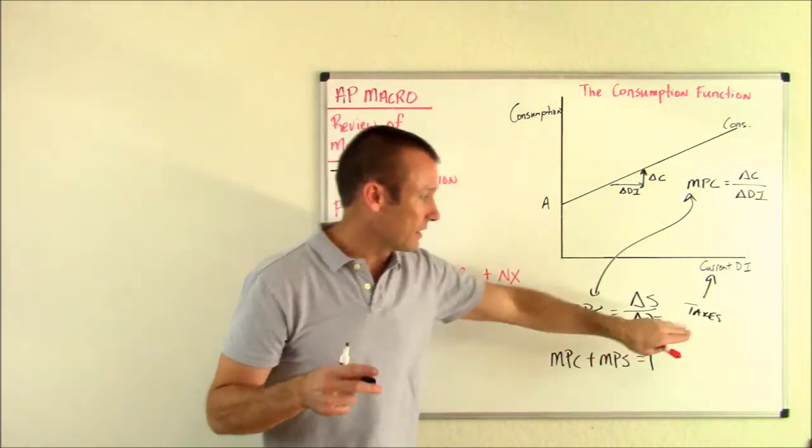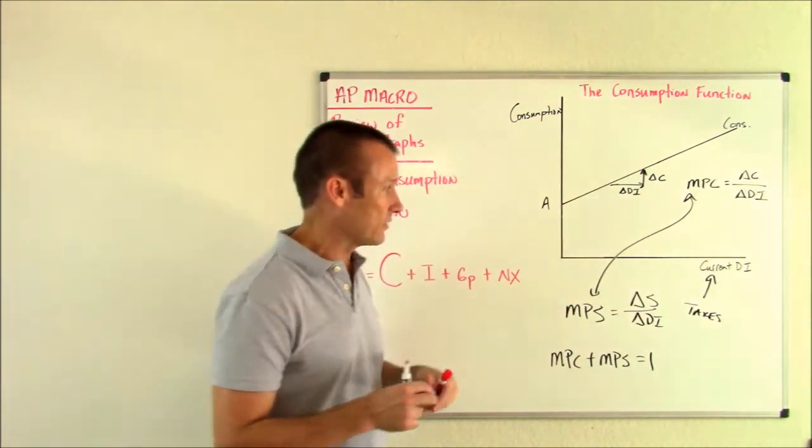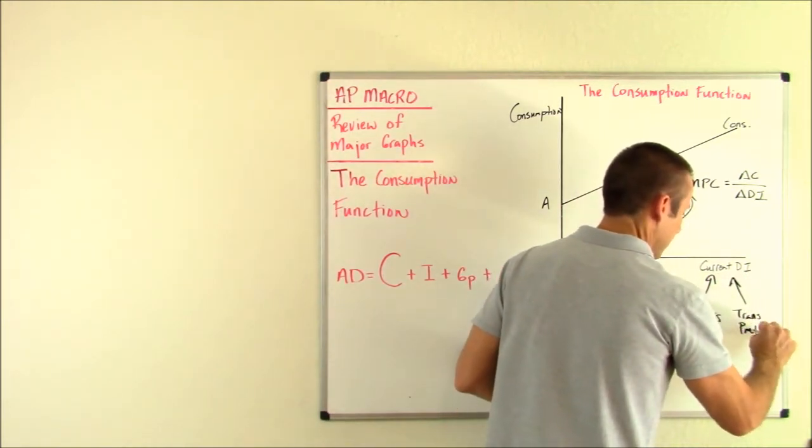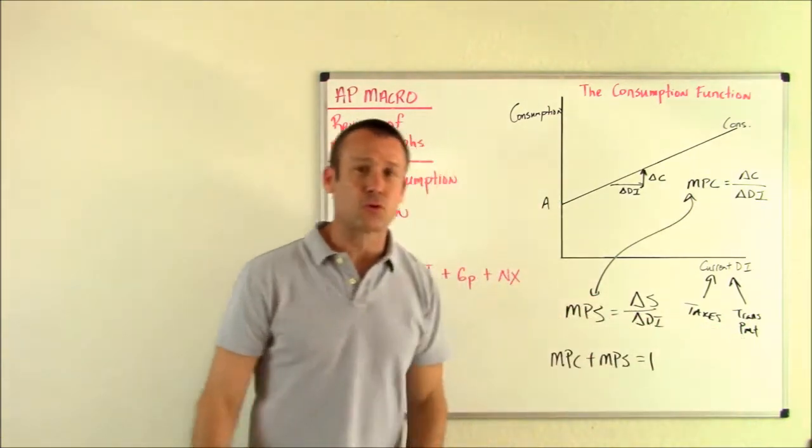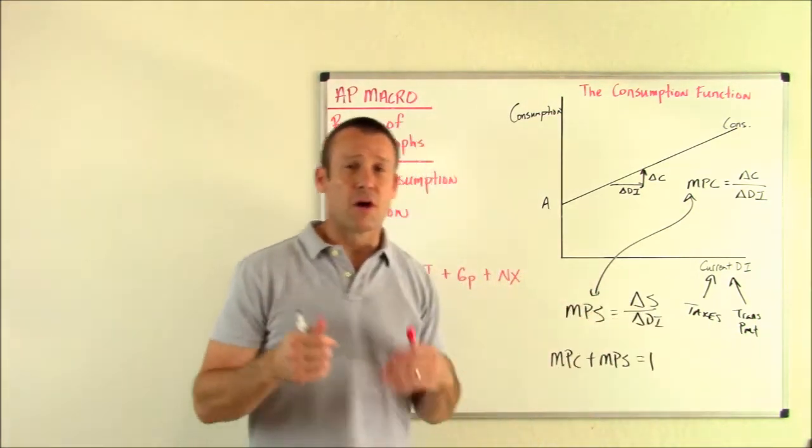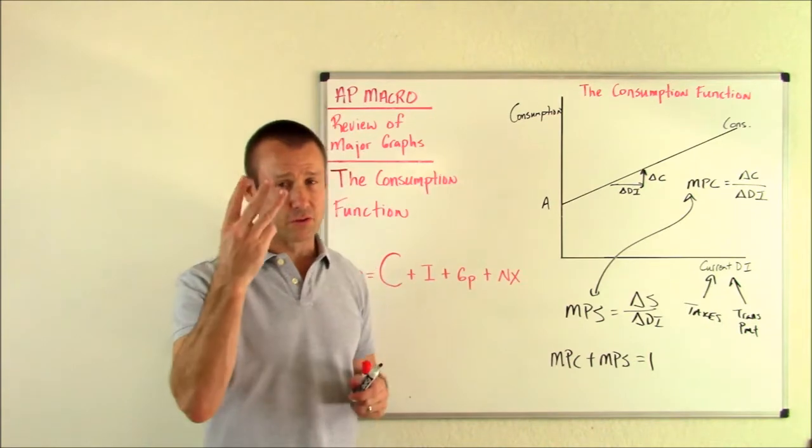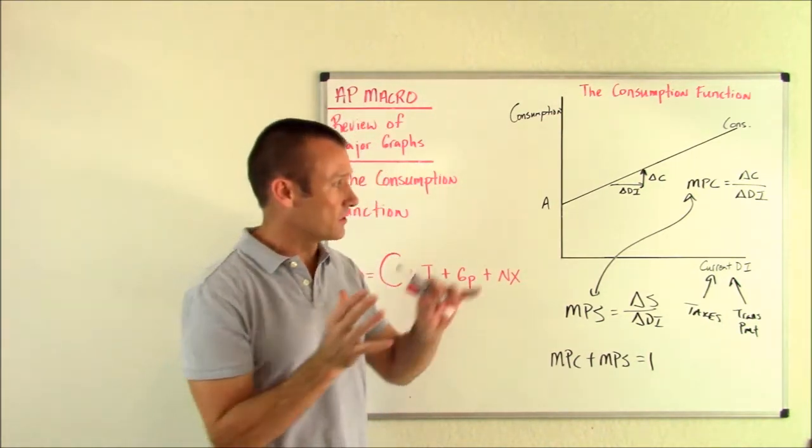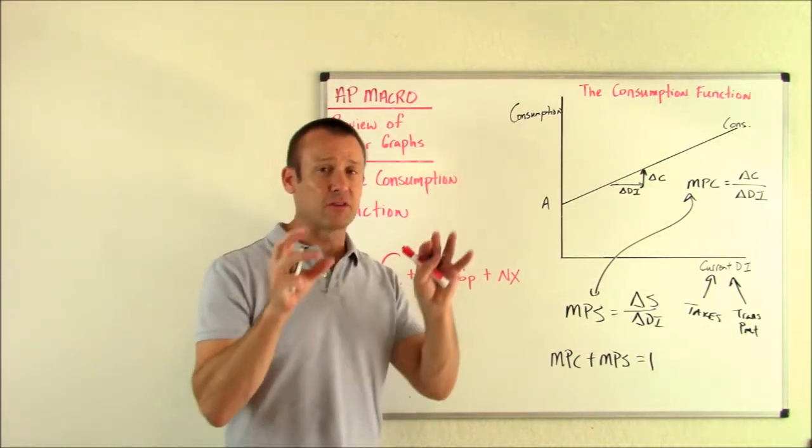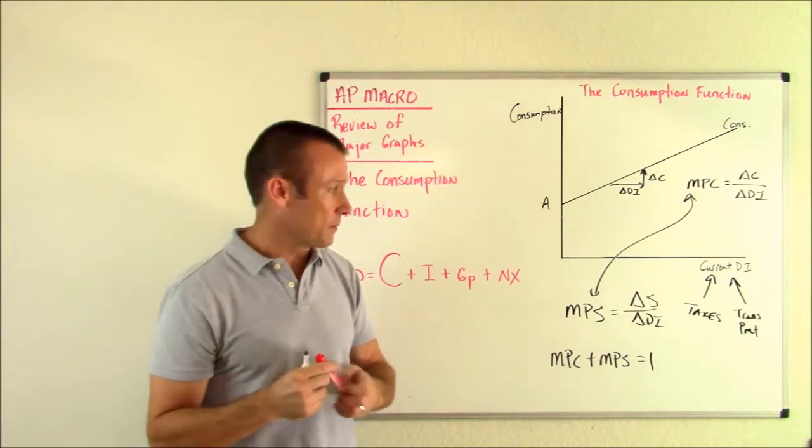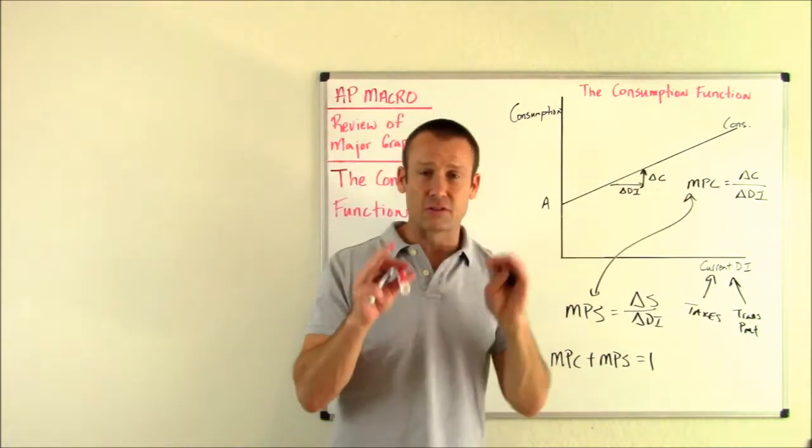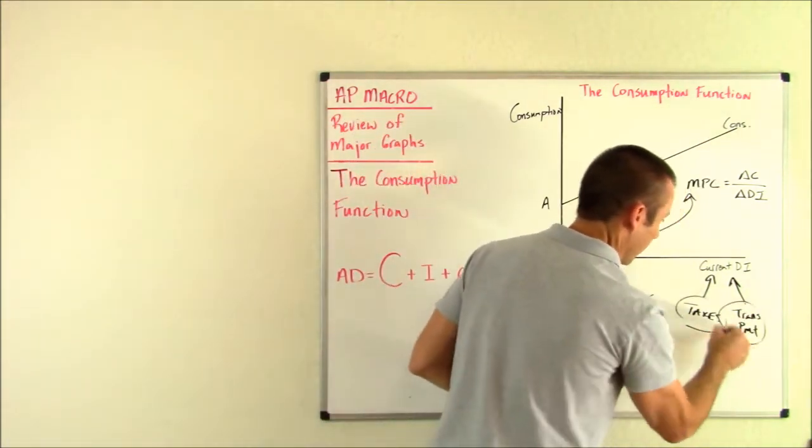So this says any time we change taxes, current disposable consumption is going to change. What else changes current disposable income is transfer payments. So what do we associate those two things with? Fiscal policy. Fiscal policy, two of their three levers are focused on changing consumption. Remember, there's three levers of fiscal policy. One is government purchases. That doesn't have anything to do with this graph. The other two is taxes and transfer payments. And the way that they get changes in spending when they change taxes and transfer payments is the fact that they're changing current disposable income when they change these, which therefore definitely changes consumption. That is super important that we always keep that in mind.